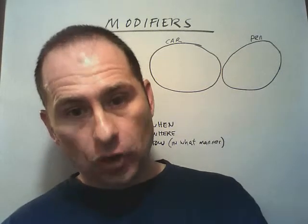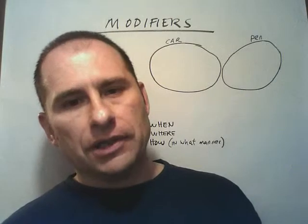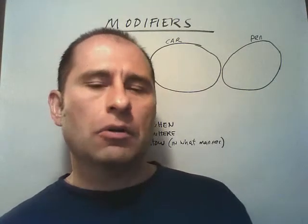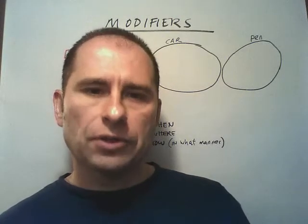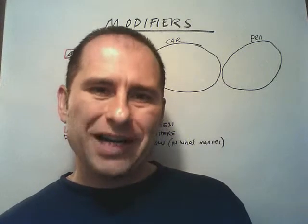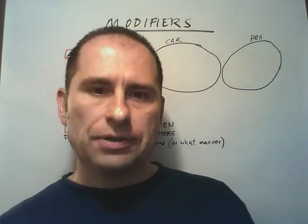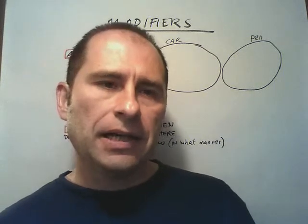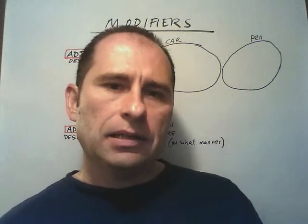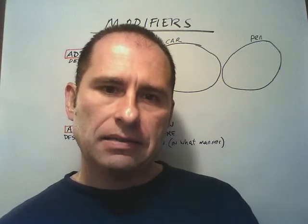The same applies to adverbs. Adverbs are words that modify or describe verbs, so it's obviously very important that you know how to find the verb in a sentence. Adjectives are words or groups of words — phrases — that describe or modify nouns. So you need to know what a noun is, and to find the verb you have to use the time test.